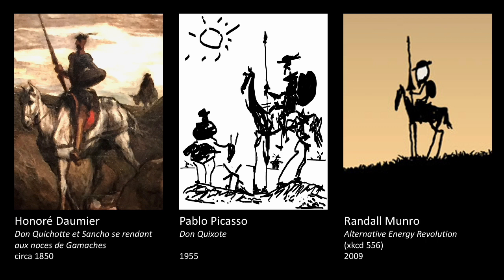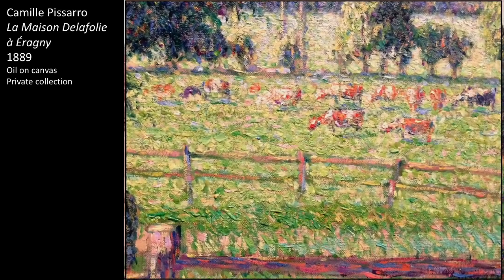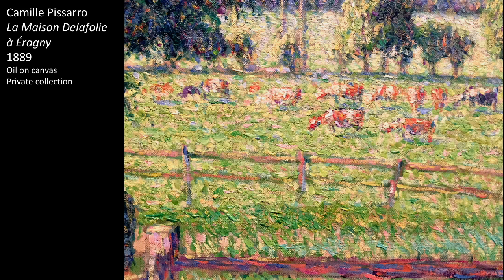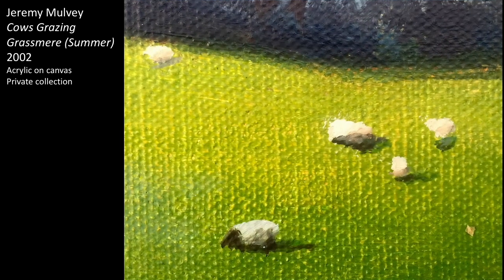However, I asked a teenager who'd never come across the story what she saw, and she identified the silhouette as an elderly lady carrying two shopping bags — and that shows the importance of contextual knowledge. Other examples of contextual knowledge come in Pissarro's picture of a bucolic scene in which the cows in the field are really very vague cows. And then this picture from 2002 which Mulvey calls 'Cows Grazing, Grasmere' — everyone I've shown this picture to says these are sheep, not cows. If we zoom in they're actually just blobs; they can be whatever you want them to be.